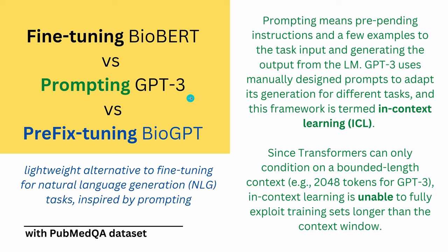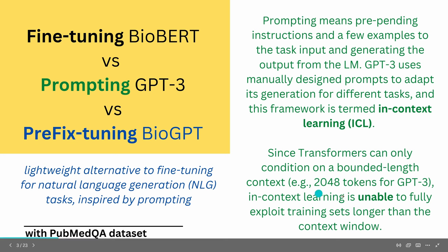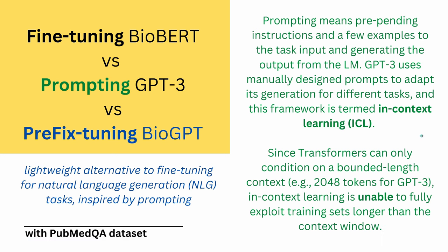There is a limitation: since the transformer decoder stack can only condition on a bounded length context, for GPT-3 it is defined as 2048 tokens in length. So in-context learning - whatever we try with prompting - is unable to fully exploit larger training sets that are longer than the context window. You have a quite hardcore limit of 2048 tokens for GPT-3.